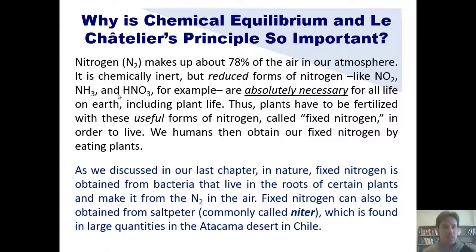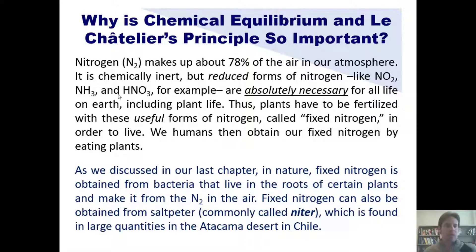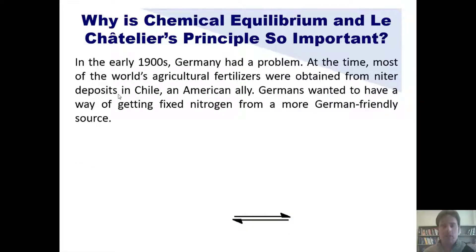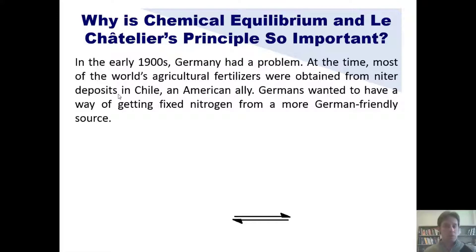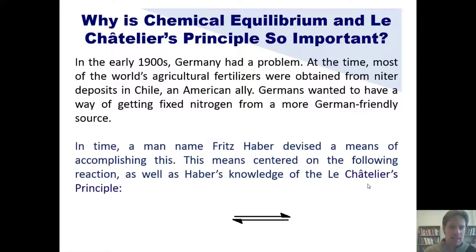In nature, fixed nitrogen is obtained from bacteria that live in the roots of certain plants, making it from N2 in the air. Fixed nitrogen can also be obtained from saltpeter, commonly called niter, found in large quantities in the Atacama Desert in Chile. This brings us to an interesting story: in the early 1900s, Germany had a problem, as most of the world's agricultural fertilizers were obtained from niter deposits in Chile, which was an American ally.